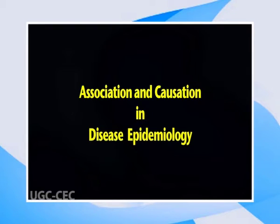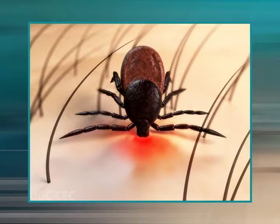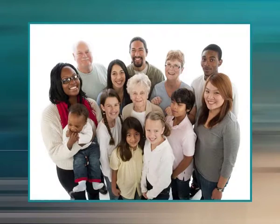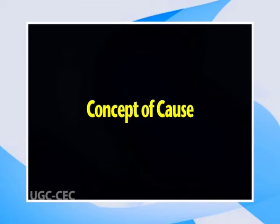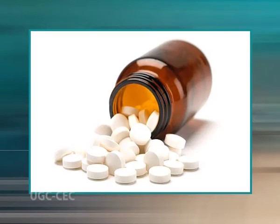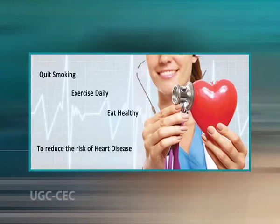Now let us learn about association and causation in disease epidemiology. The fundamental objective of epidemiology is the identification of the causes of disease through the appropriate study of the distribution of cases within groups of humans with a range of identified characteristics, such as different levels of exposure to some agent, for example a chemical. An understanding of the causes of disease is important not only for prevention but also in diagnosis and application of treatment. A cause of a disease is an event, condition, characteristic, or combination of these factors which plays an important role in producing the disease.